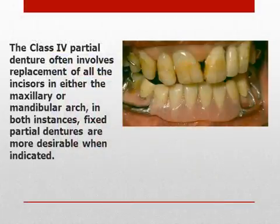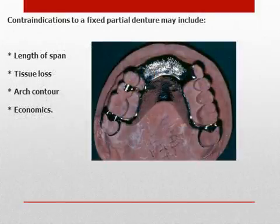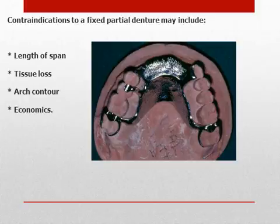The Class 4 partial denture often involves replacement of all the incisors in either the maxillary or mandibular arch. In both instances, fixed partial dentures are more desirable when indicated. Contraindications to a fixed partial denture may include length of span, tissue loss, arch contour, and economics.